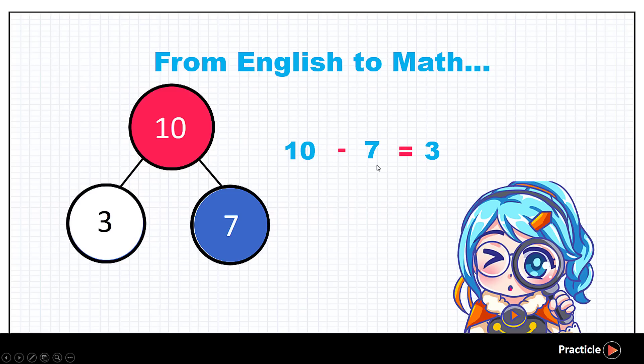So this is how the subtraction sentence should look like. 10 minus 7 equals 3. So what we are saying is that when we take away a part of a whole, we are left with the other missing part. So since we know that 3 and 7 are parts of 10, we could also write 10 minus 3 equals to 7. Since taking one part away from the whole, we will surely leave you with the other part.